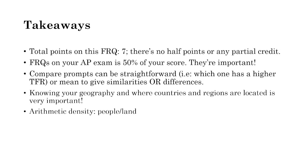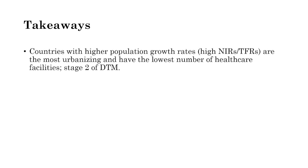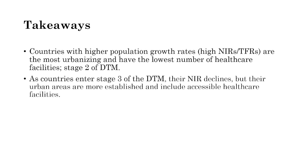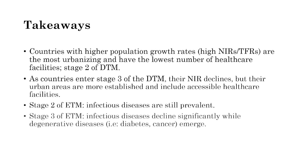Regarding population densities as a review: arithmetic density is the number of people over all of the land; physiological density is people over arable land (land that can be farmed); and agriculture density is the number of farmers per unit of arable land. Countries with higher population growth rates — high natural increase rates, high total fertility rates, high crude birth rates — are the most urbanizing and have the lowest number of healthcare facilities, in stage 2 of the DTM. As countries enter stage 3, like Nigeria, UAE, or Mexico, natural increase rates decline as total fertility rates drop, infant mortality falls, and accessible healthcare facilities become established. In stage 2 of the ETM we see prevalence of infectious diseases; in stage 3, with more sanitation and access to antibiotics, infectious diseases decline significantly and degenerative diseases like diabetes and cancer emerge.